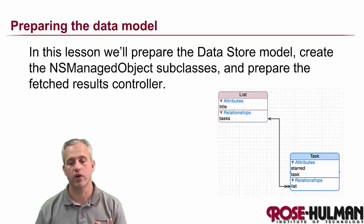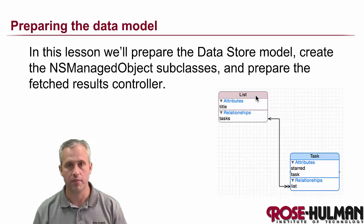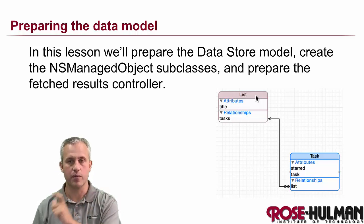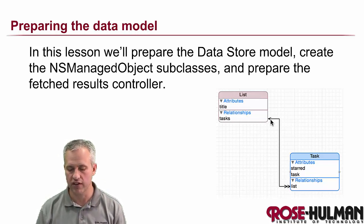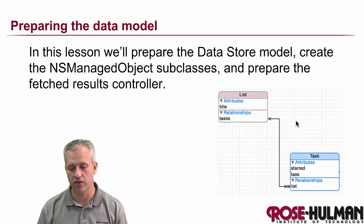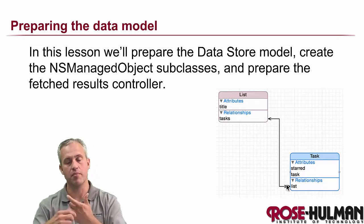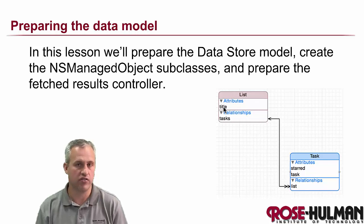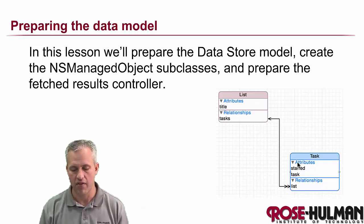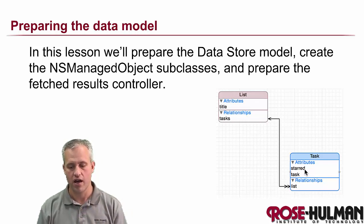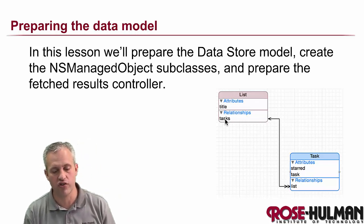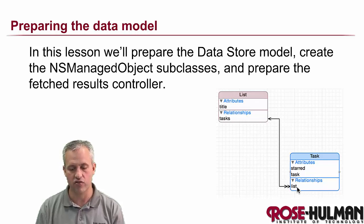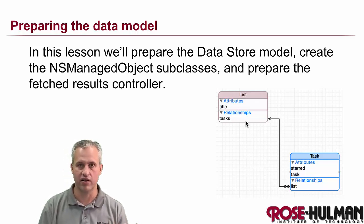The data we want to make here is going to have two entities. There's going to be a list item entity and then a task entity, with a relationship between them. There's a single arrow because each task points to one list, but a double arrow on the other end because each list points to many different tasks. A list is going to have a title attribute, and a task is going to have whether it's starred or not, and then the actual text of the task — which I call task, a little confusing, but just deal with it. There's a relationship from a list to many tasks and from the task back to the list — an inverse relationship.